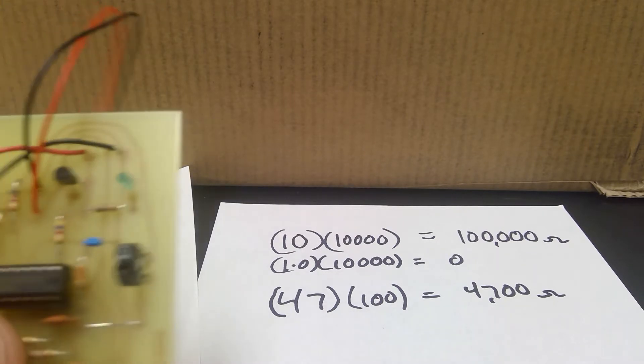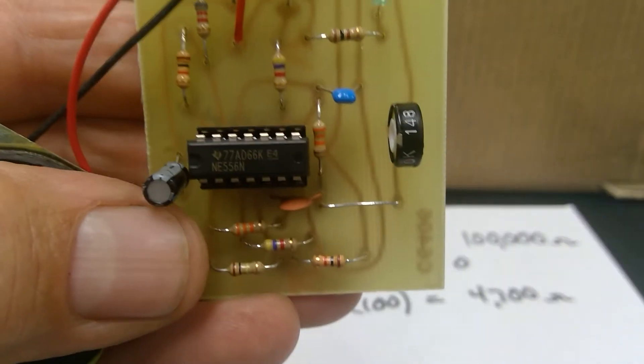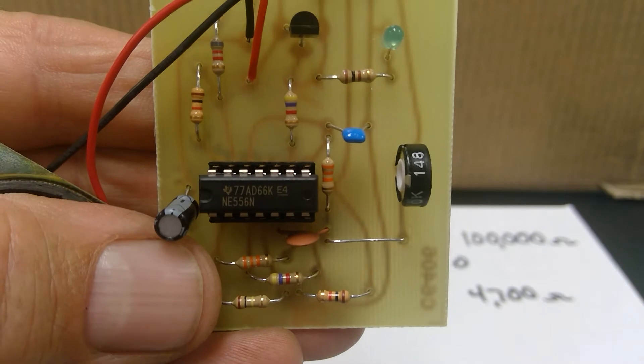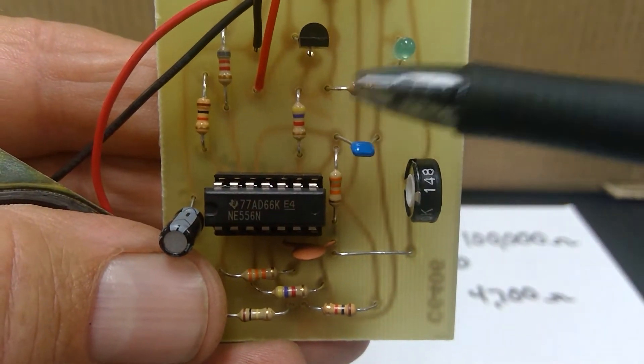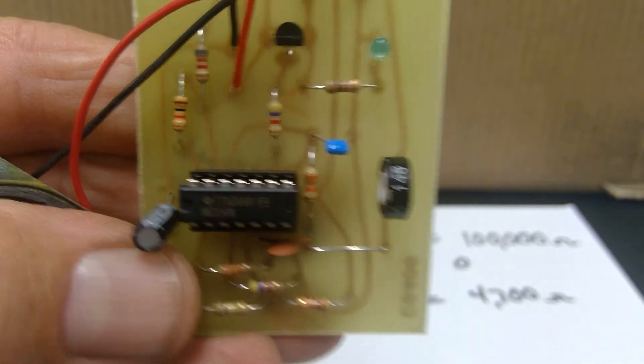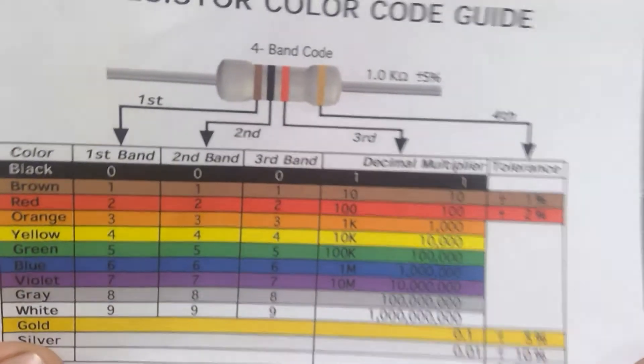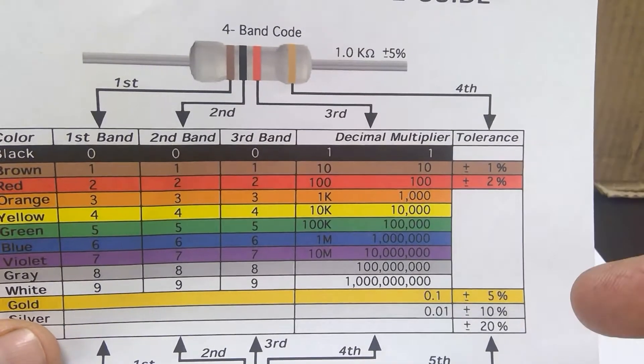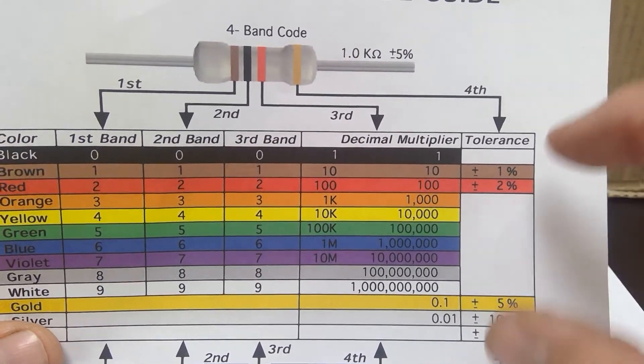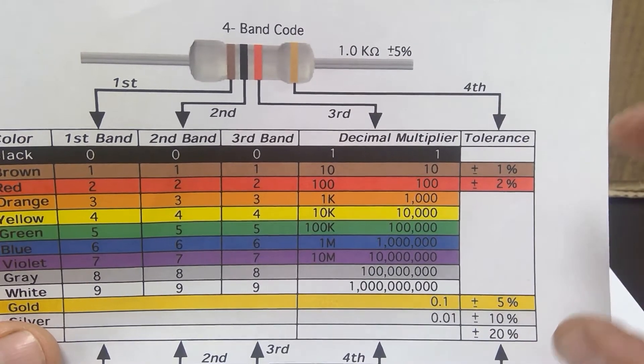Now, let's take a look at that last band. And on here, all of these have a gold band for the last band. That last band is what's known as a tolerance band. And what it does is it gives us a range for what the value as measured can be for the resistor.